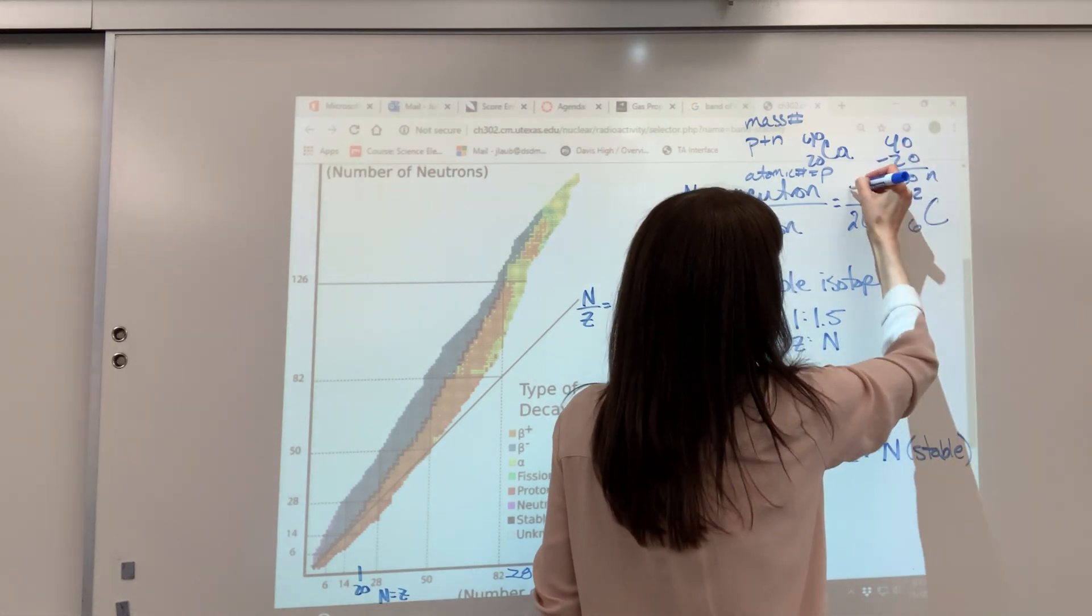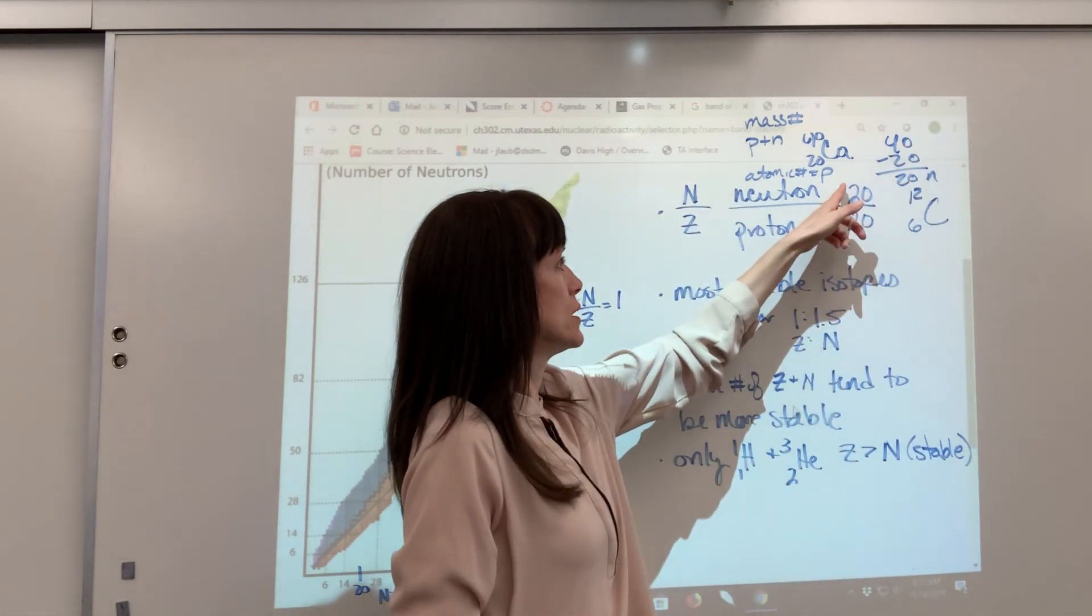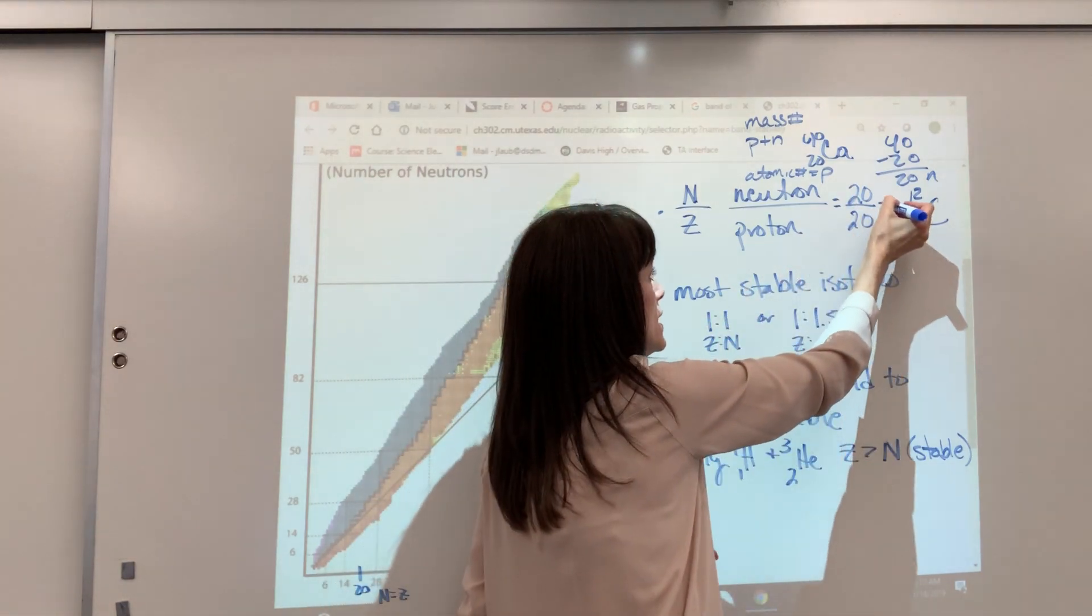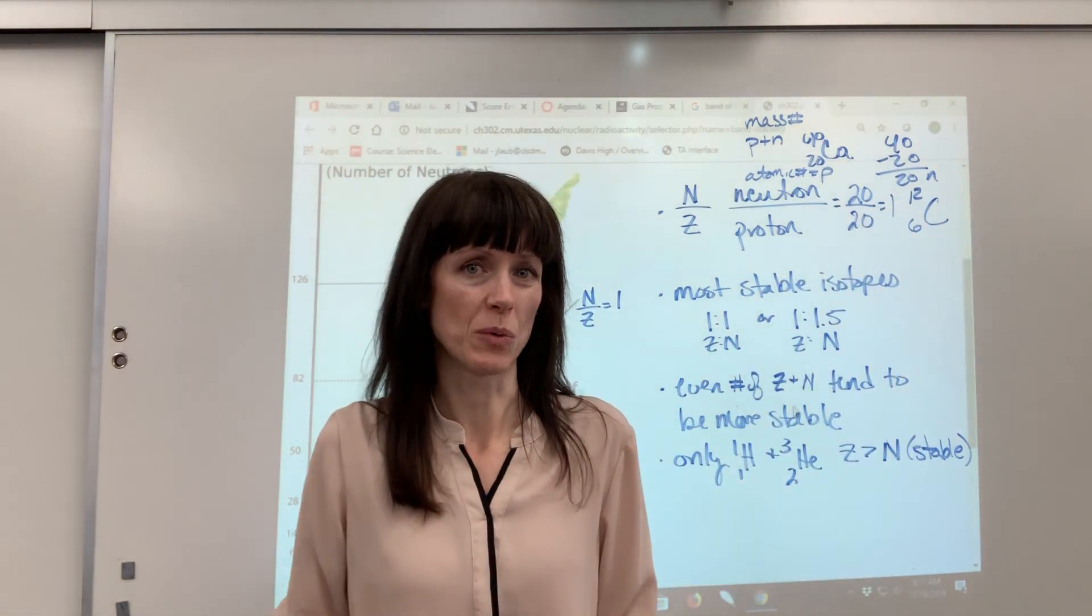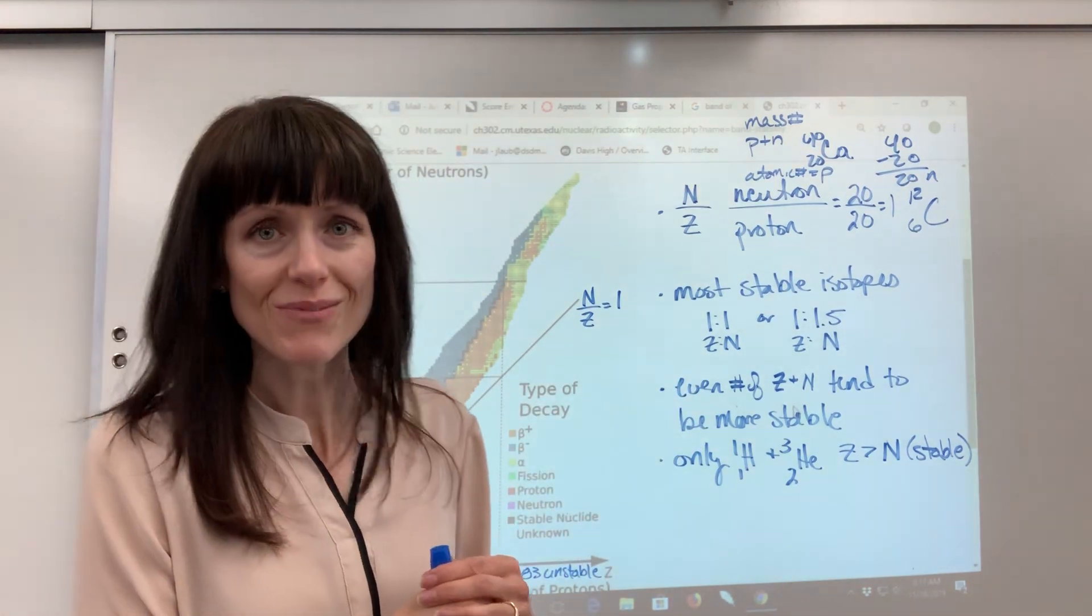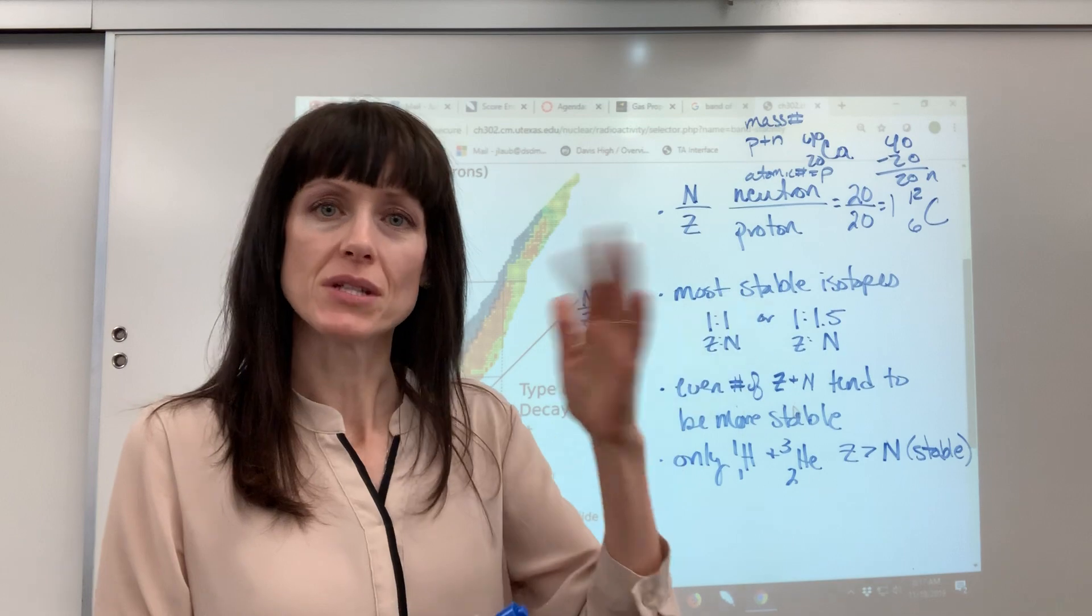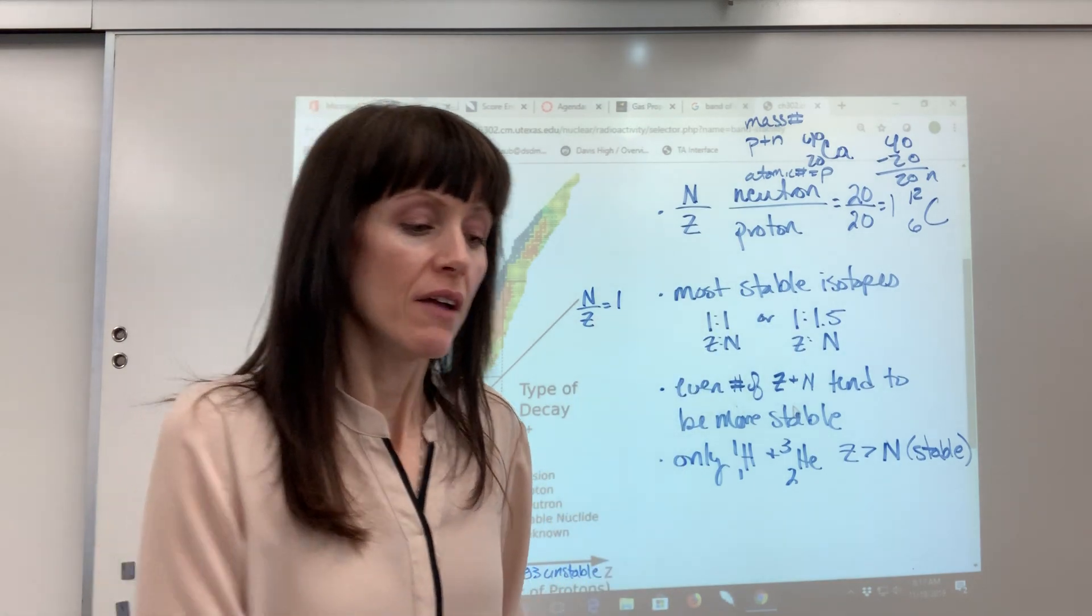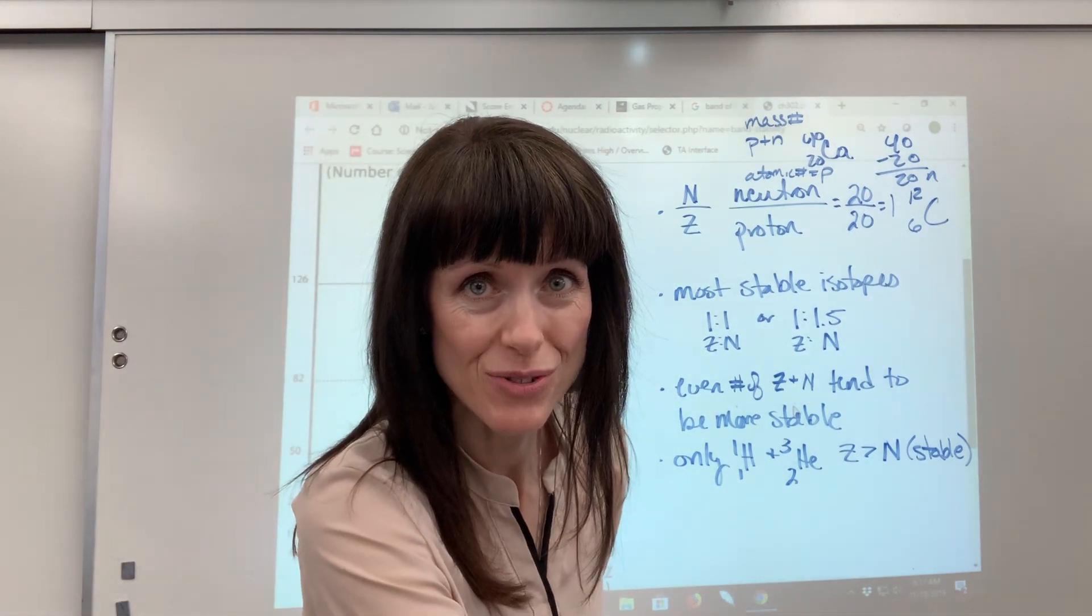So when I subtract 40 minus 20, it gives me 20 neutrons. So you put 20 right there. 20 neutrons divided by 20 protons gives me 1, so that would be a stable isotope. So you have to figure out the neutron-proton ratio. Just use your mass number, atomic number, neutrons divided by protons. You'll be good to go.